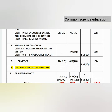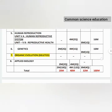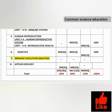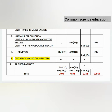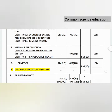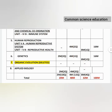Unit 6 Genetics chapter will be deleted. Unit 8 Applied Biology will have 2-mark questions (2 questions) and 4-mark questions (2 questions), with no 8-mark questions. The overall total choices will now be summarized.